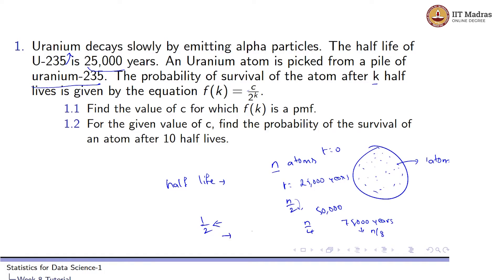And if you want to look at after two half-lives, it would be (1/2)^2. After three half-lives, it would be (1/2)^3. Because after three half-lives, only 1/8 of the atoms remain. So for this atom to be surviving, the probability would be 1/8, because already 7/8 of the atoms after three half-lives will be decaying. So the probability after three half-lives would be equal to (1/2)^3.